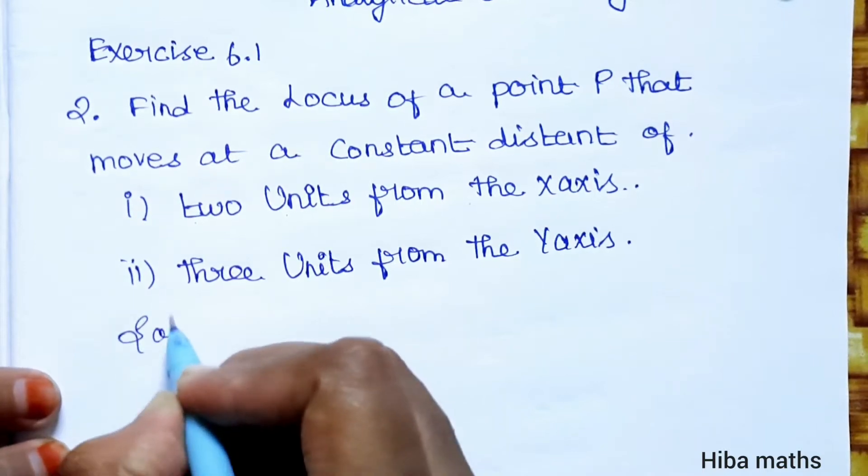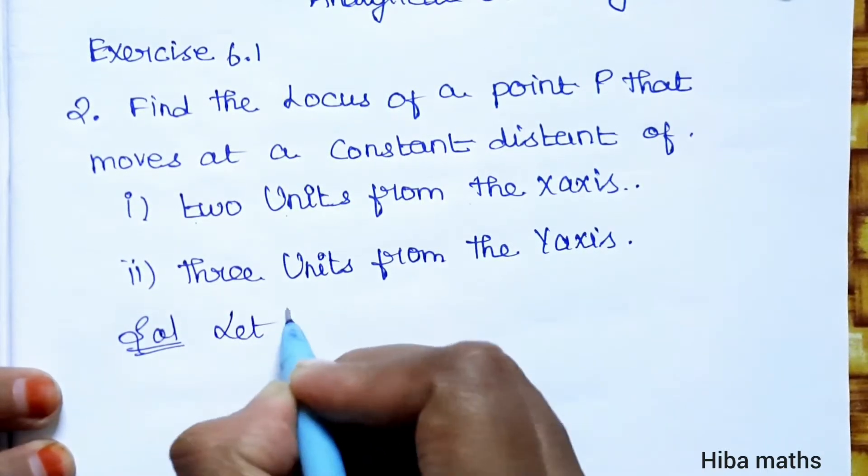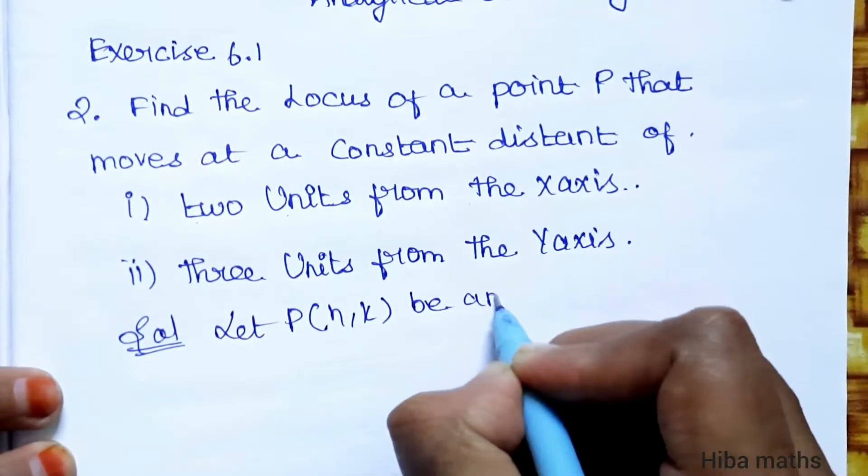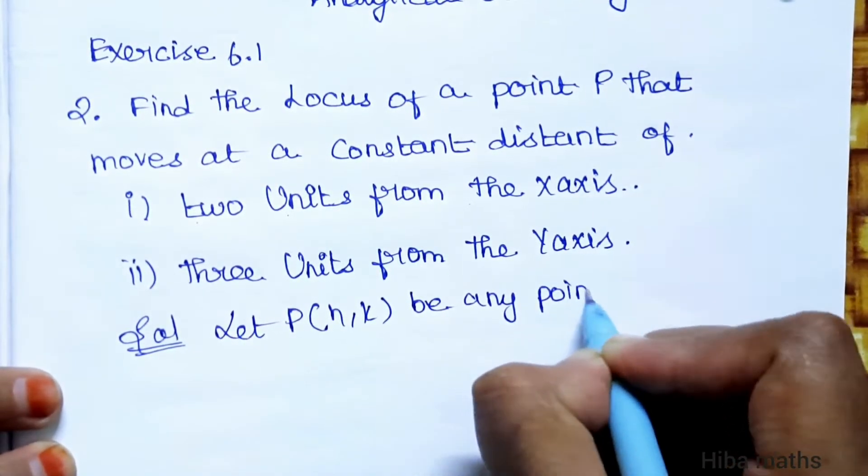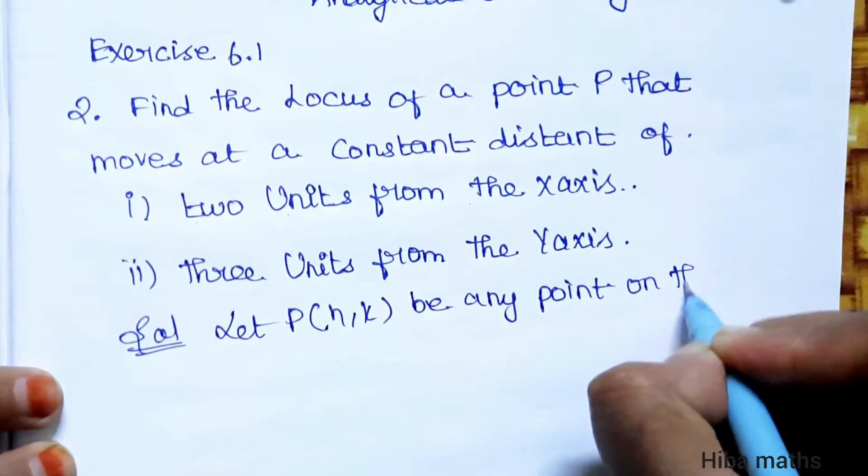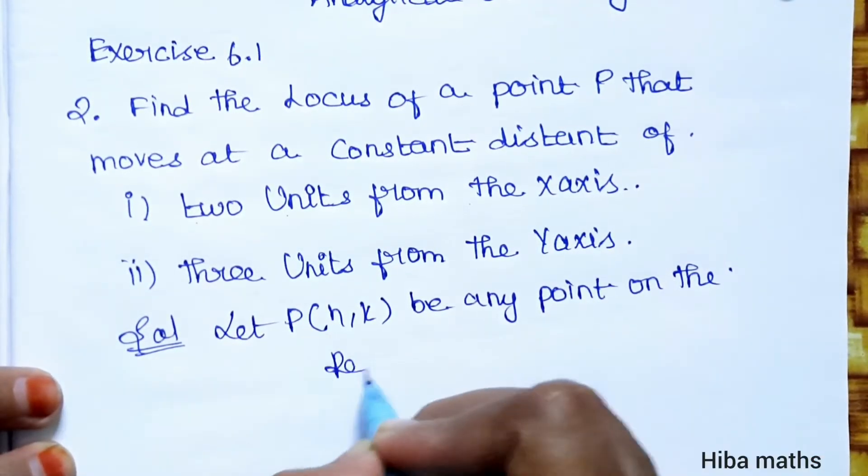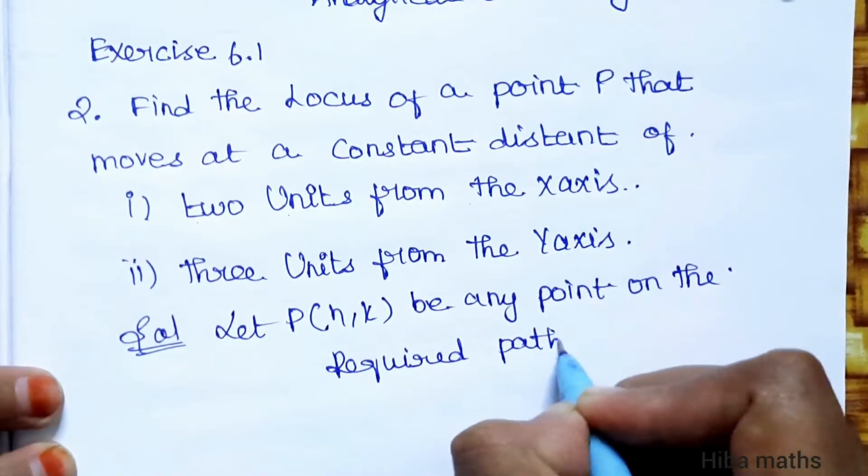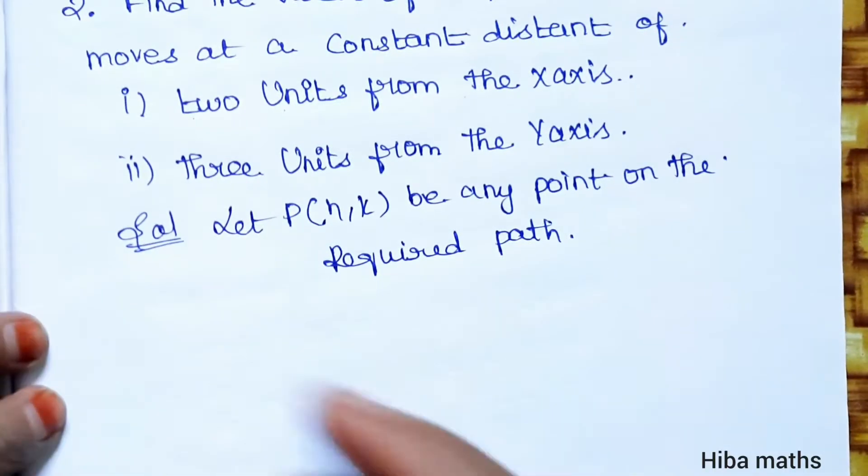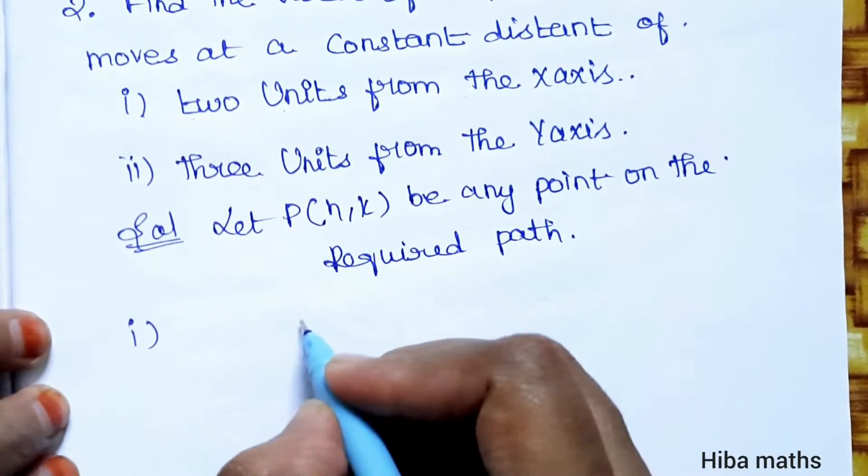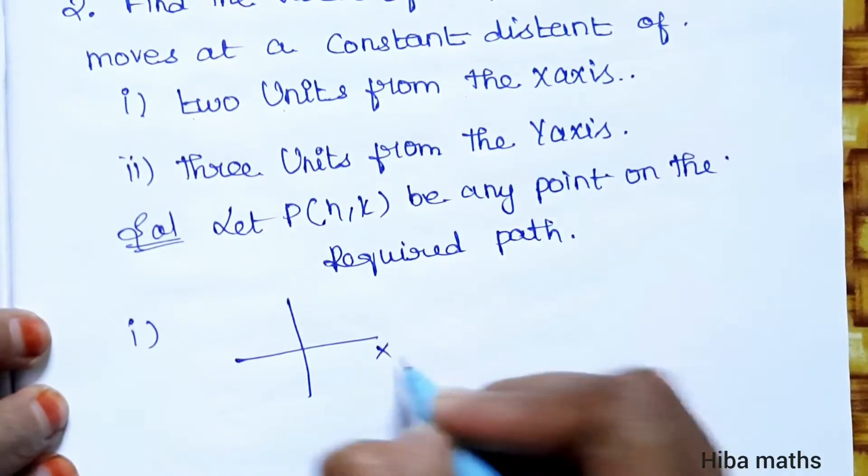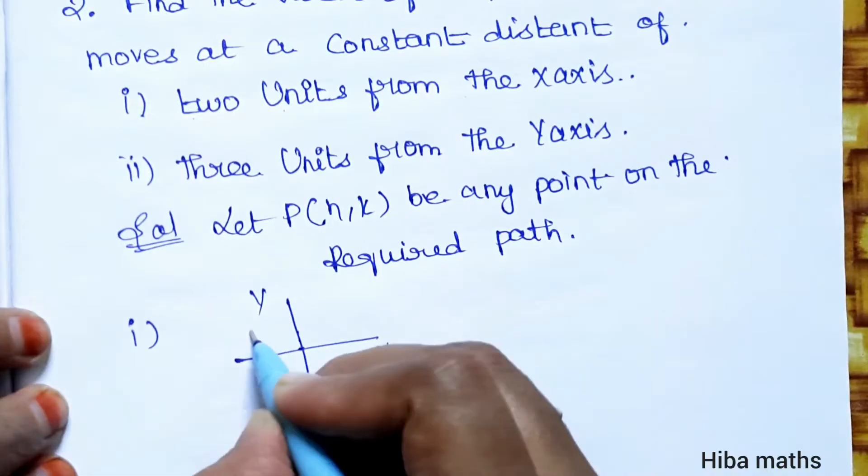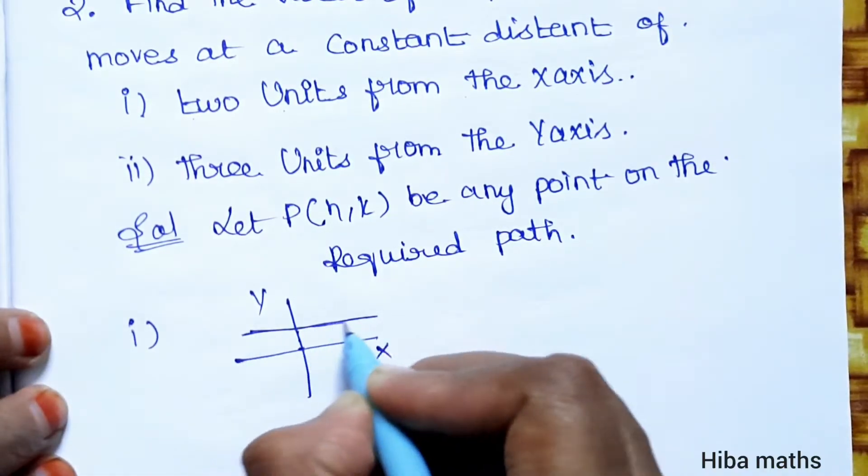Solution: Let P(h,k) be any point on the required path. First, let's address the subdivision: two units from the x-axis. Now we have the x-axis and y-axis. Two units are 0, 1, 2. The two units are parallel to the line.